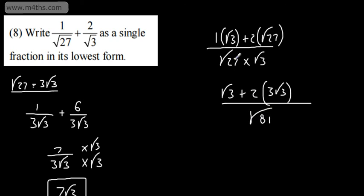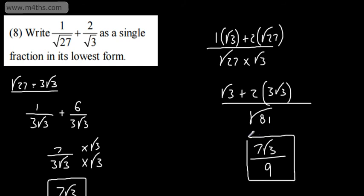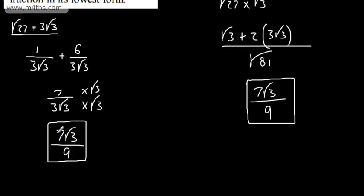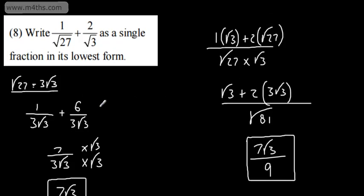Remember, the root of A multiplied by the root of B is the same as the root of AB. So in the numerator, I've got 1 root 3 plus 6 root 3, which is going to give me 7 root 3. The square root of 81 is 9. So that is an alternative. The reason that one works out so nicely is when we multiply these two numbers, we get a square number, and of course taking the square root is going to give us an integer value. If that wasn't the case, I would simply rationalize and combine the fractions that way.